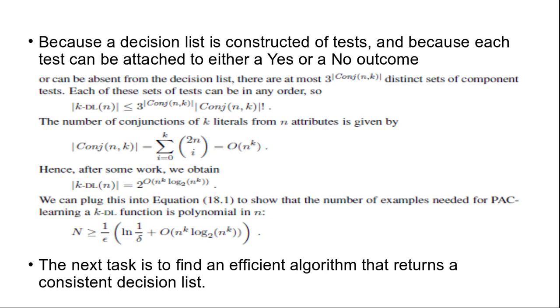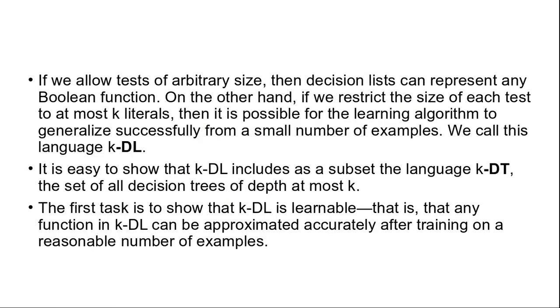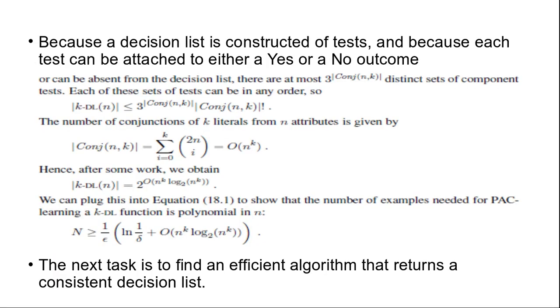This equals summation from i equals 0 to K of 2N choose i. Hence, after some work we obtain |k-DL(N)| equals 2 to the power O of K squared N to the power K. We can plug this into equation 1.